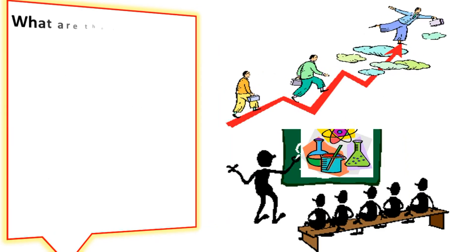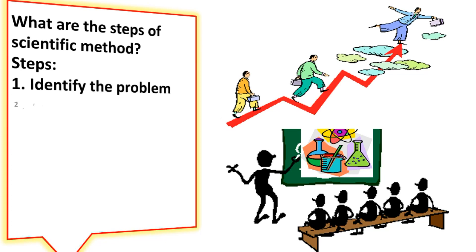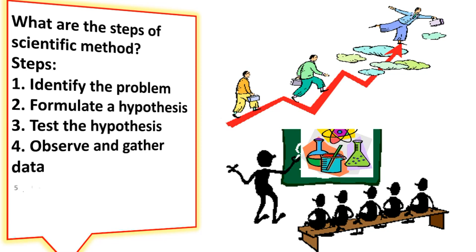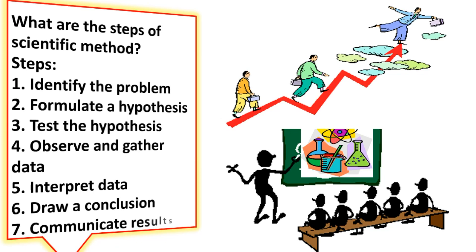What are the steps of the scientific method? Step 1: Identify the problem. Step 2: Formulate hypothesis. Step 3: Test the hypothesis. Step 4: Observe and gather data. Step 5: Interpret data. Step 6: Draw a conclusion. Step 7: Communicate results.